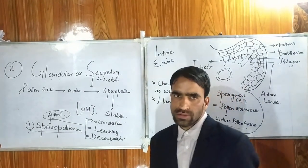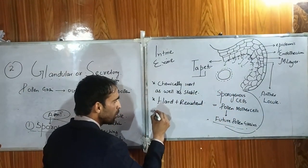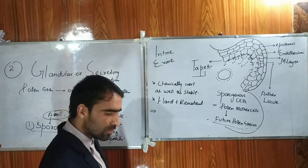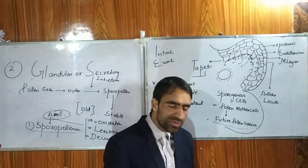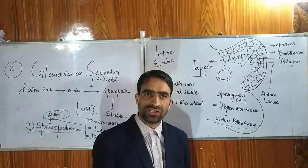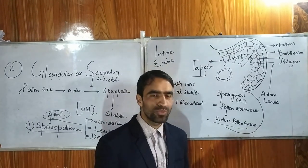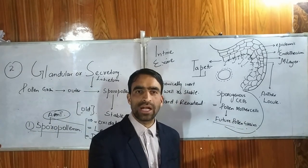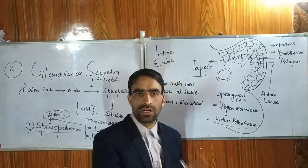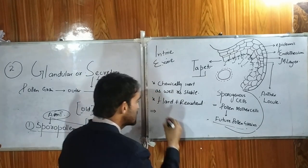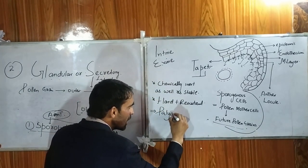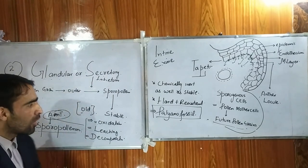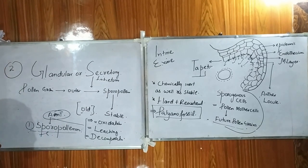The pollen grain has an outer wall called sporopollenin. Because of this, many pollen grains still exist in the earth which are millions of years old — existing as fossils. You can go to the Birbal Sahni Paleobotanical Institute at Lucknow and observe that palynologists have extracted many pollen grains from fossils. These pollen grains, millions of years old, tell their story — once on a plant, they fell, got encrusted in earth, but sporopollenin preserved them. The fossil of a pollen grain is called a palino fossil.